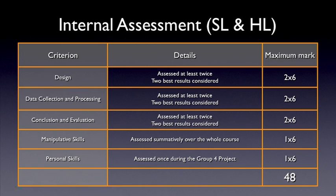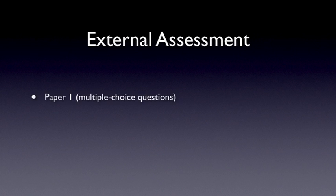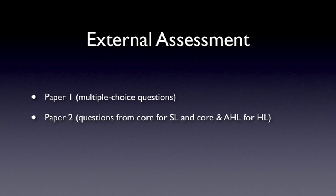The internal assessment grade can be anywhere between 0 and a maximum of 48 points. The final IB exam consists of three papers. Paper 1 consists of multiple choice questions. Paper 2 covers the core material for standard level students, and the core and the advanced higher level material for higher level students. Paper 3 consists of questions from the two options studied.